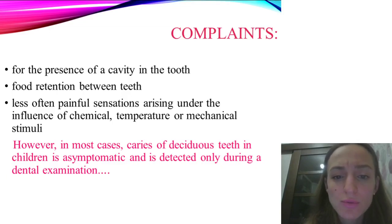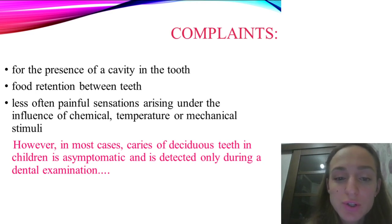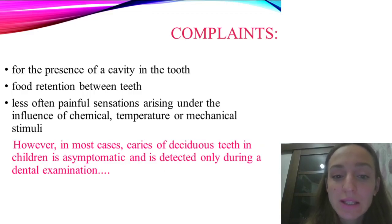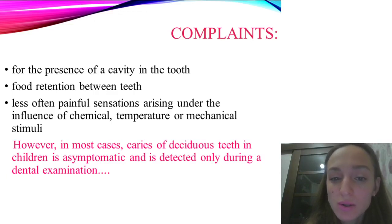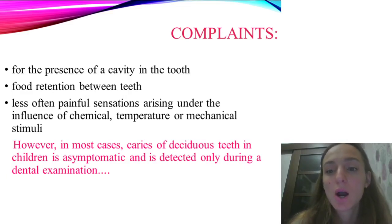Caries in deciduous teeth at the stage of root formation is characterized by rapid transition from uncomplicated to complicated form, caused by anatomic features of dentine and pulp in deciduous teeth. During this period, the teeth are characterized by white dentine, a thin layer of low-mineralized dentine over the pulp, large size of the pulp chamber, and pulp horns located close to the enamel-dentine junction.